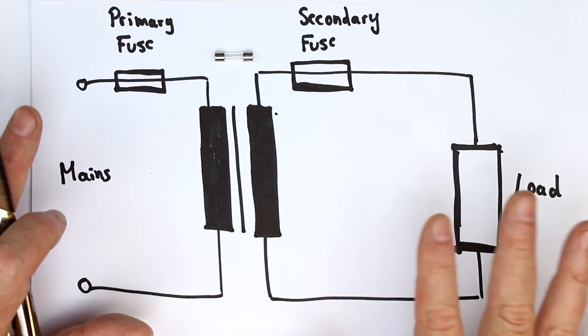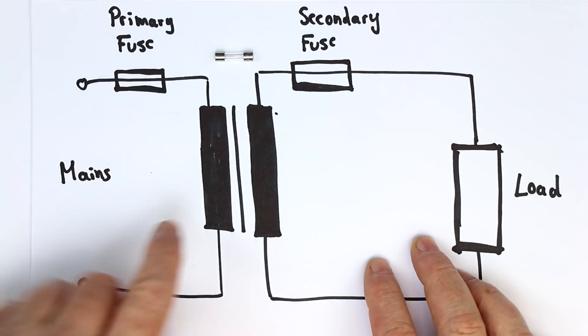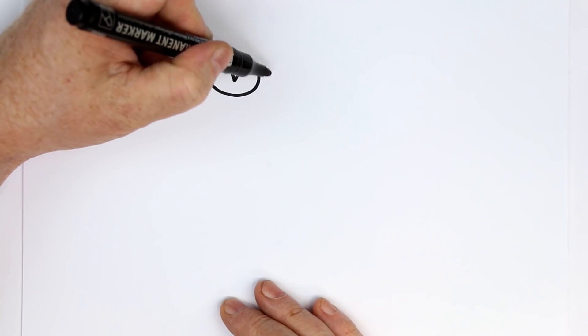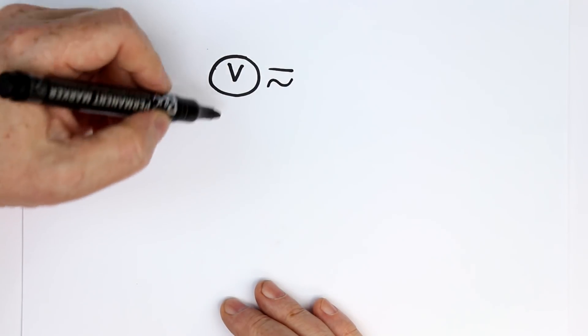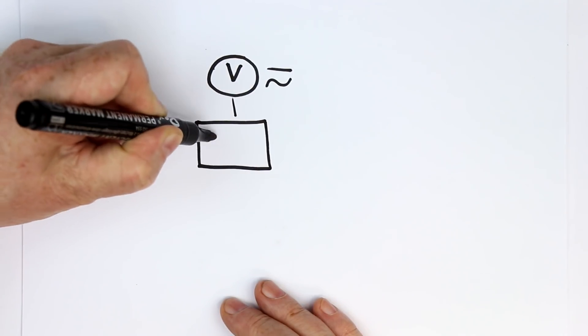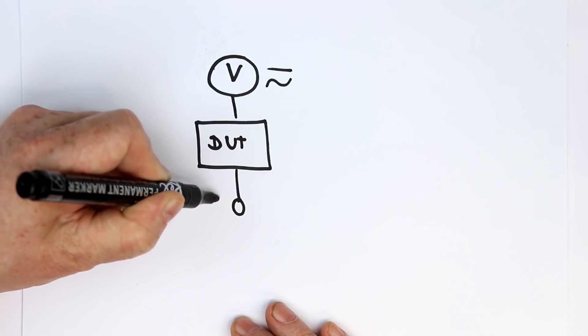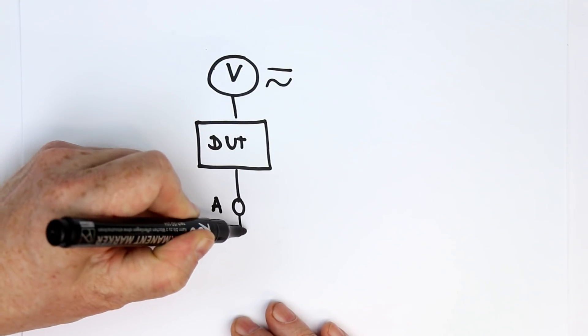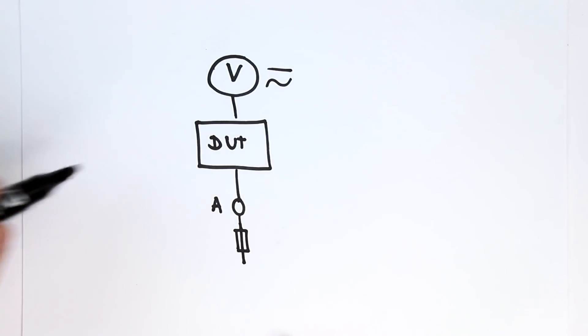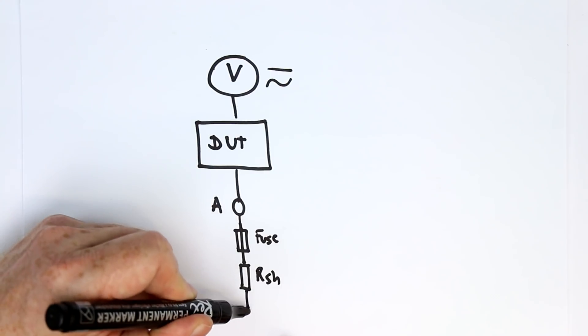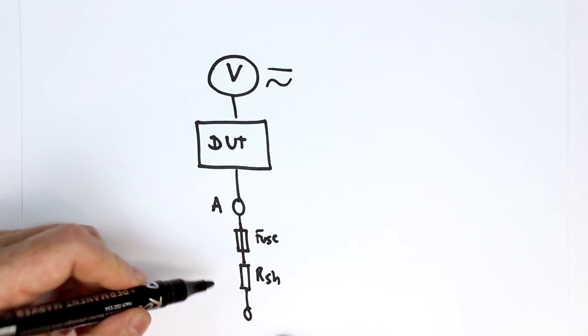But in a multimeter, we have a completely different situation. Let's draw the equivalent circuit of what happens in your amps-measuring multimeter. When you do current measuring with your multimeter, your test setup usually looks like this: You have a voltage source, whether AC or DC, your device under test, and then comes the amps input of your multimeter. Inside it, there's first your fuse, and then comes the current shunt, which measures the voltage drop over the shunt to give you the amps.